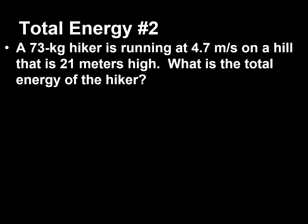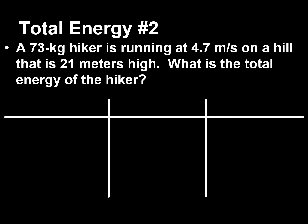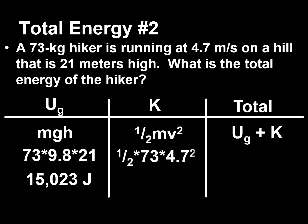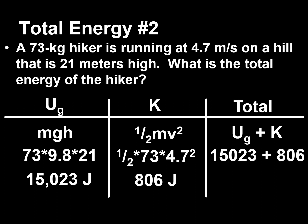A 73-kilogram hiker is running at 4.7 meters per second on a hill that is 21 meters high. What is the total energy of the hiker? Gravitational potential energy: 73 × 9.8 × 21 = 15,023 joules. Kinetic energy: ½ × 73 × 4.7² = 806 joules. Total energy: 15,023 + 806 = 15,829 joules.